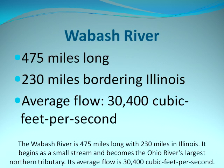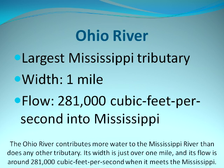The Wabash River is 475 miles long, with 230 miles in Illinois. It begins as a small stream and becomes the Ohio River's largest northern tributary, with an average flow of 30,400 cubic feet per second. The Ohio River contributes more water to the Mississippi than any other tributary, with a width of just over a mile and a flow of around 281,000 cubic feet per second when it meets the Mississippi.